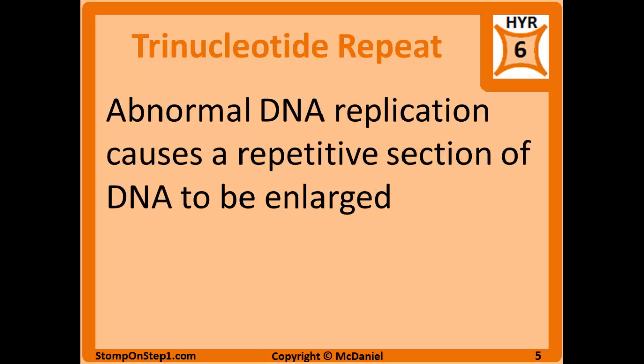Trinucleotide repeat expansion disorders occur when abnormal DNA replication causes a repetitive section of DNA to be repeated more times than it should be. For example, a gene may normally have a certain 3-nucleotide code repeated a dozen times, but in a diseased person that same code is repeated hundreds of times — as if the DNA replication machinery gets stuck on it. The severity and age of onset of these diseases can be predicted by the number of repeats: the more repeats, the sooner and more severely the disease presents.